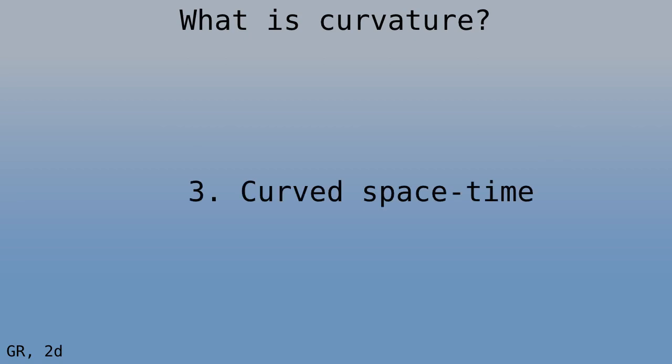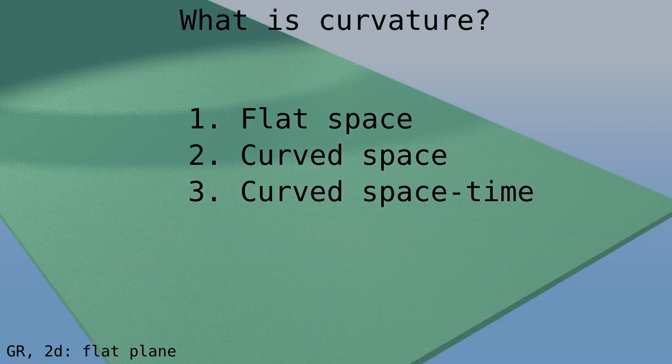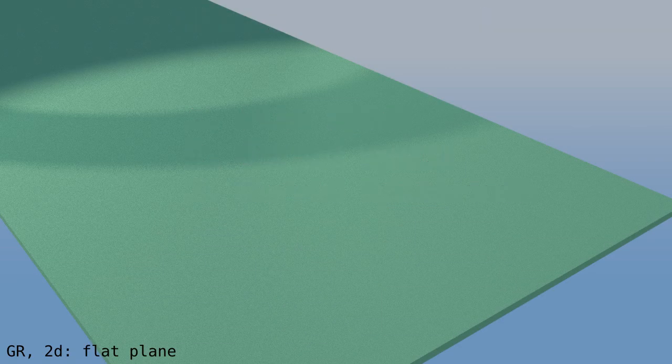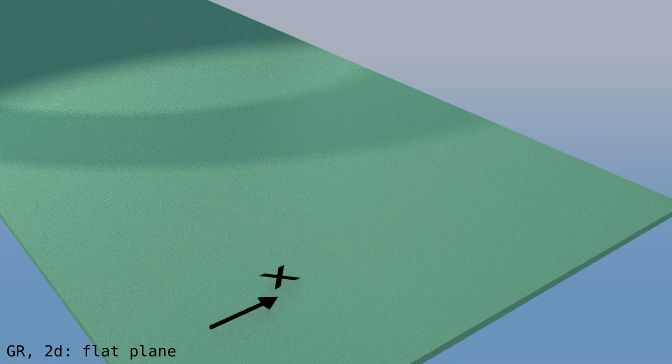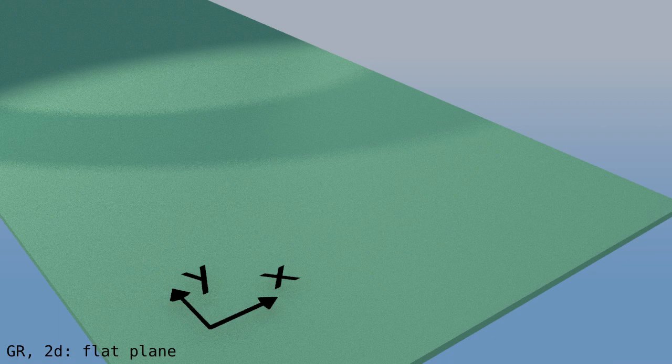General relativity tells us that spacetime is curved. What does that mean? Well, there are two very different ways of looking at it. But before we look at curved spacetime, let's look at curved space without time. And before we look at a curved surface, let's look at a flat surface, that is, a plane. A plane is a two-dimensional surface with coordinates x and y. We'll now show a couple of things that are trivial on the plane, but not so trivial on a curved surface.